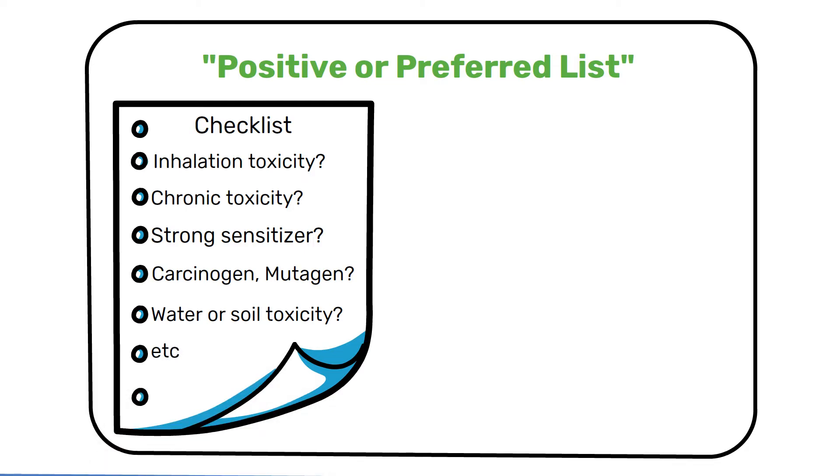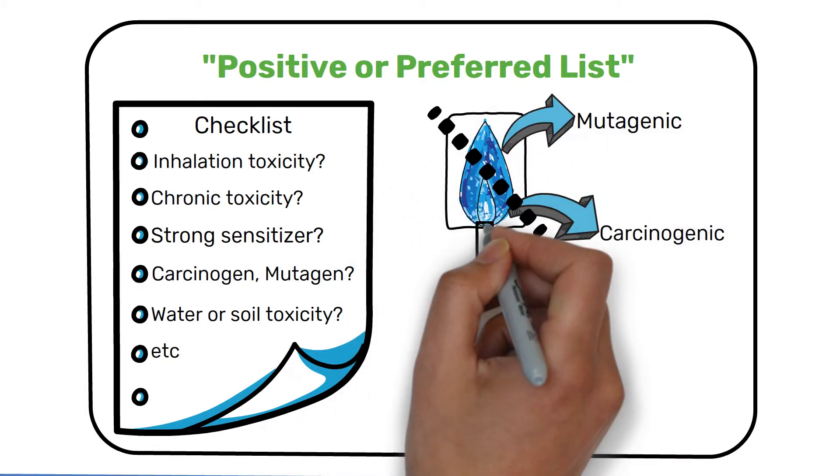For example, a manufacturer of polyester fabric having discovered that the blue dye it is using is mutagenic and carcinogenic might choose another safe blue dye.